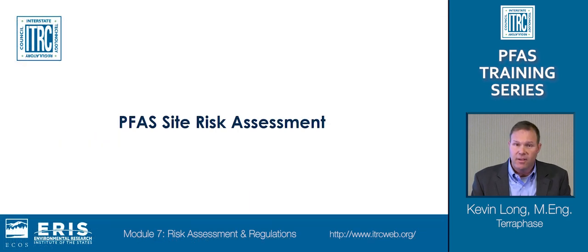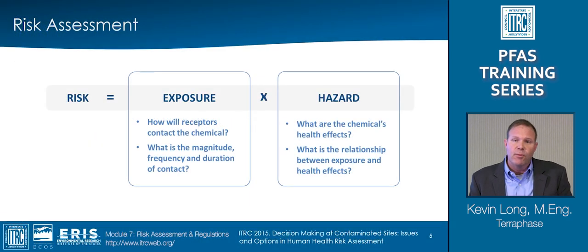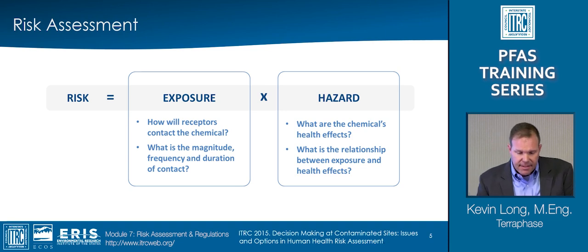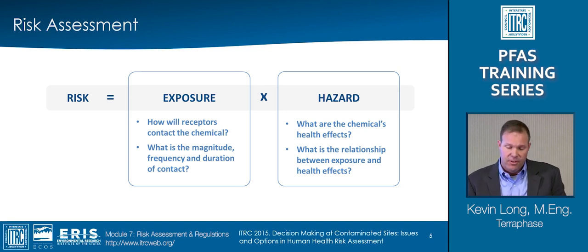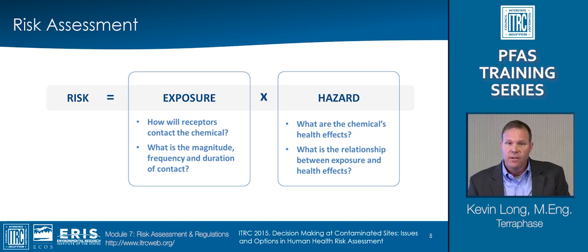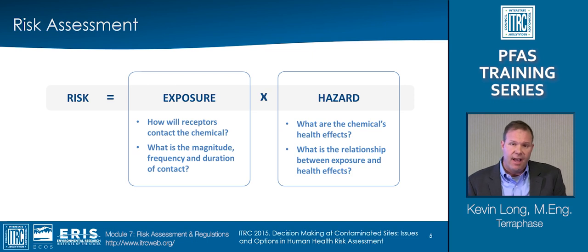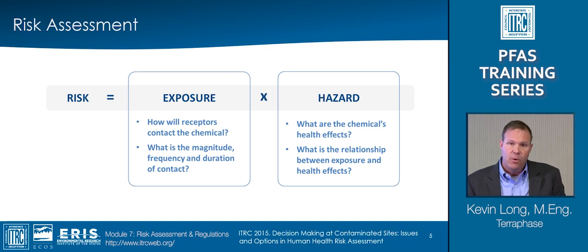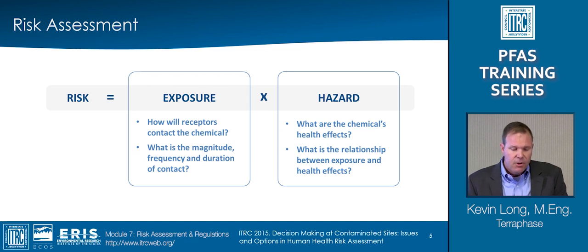Now let's talk about PFAS site risk assessment. You can think of risk assessment as a systematic and scientific characterization of potential adverse effects from exposure to hazardous agents or hazardous chemicals. This involves considering the types of hazards that a receptor is or could be exposed to, the extent of their exposure to such hazards, and the relationship between exposure and the likelihood of an adverse effect. Simply put, you can think of risk as being made up of two parts: exposure and hazard.